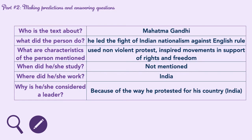Using the text we just saw, we can answer the following. For the first question — who is the text about? — we can say Mahatma Gandhi. What did the person do? He led the fight of Indian nationalism against English rule. What are characteristics of the person? He used non-violent protests and inspired movements in support of rights and freedom.